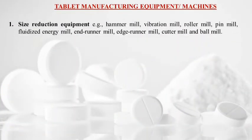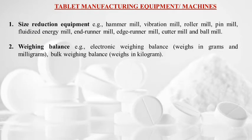Tablet manufacturing equipment and machines: First is size reduction equipment — examples include hammer mill, vibration mill, roller mill, pin mill, fluidized energy mill, end runner mill, edge runner mill, cutter mill, and ball mill. Next are weighing balances — electronic weighing balance for weighing in grams and milligrams, and bulk weighing balance for weighing in kilograms.